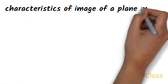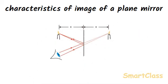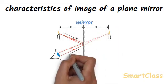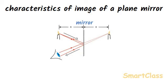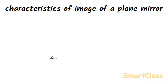Let us study the characteristics of images formed by a plain mirror. Take the example of a lighted candle placed in a room in front of a plain mirror. The light rays coming from the candle travel in straight lines to the mirror. The mirror reflects these rays of light and the reflected light rays enter our eyes. These light rays seem to be coming from a point behind the mirror, so we see an image of the candle in that position. The image seen of the candle in the mirror is a virtual image.